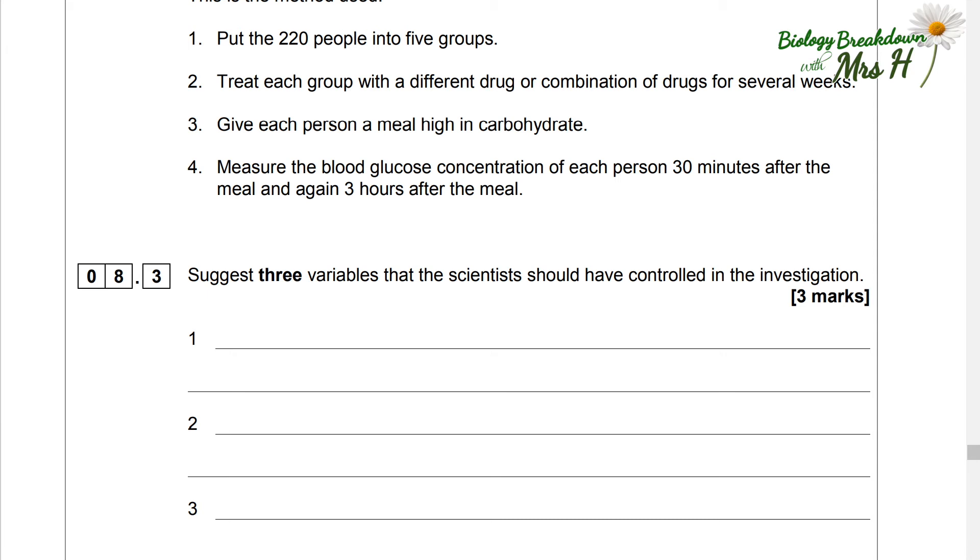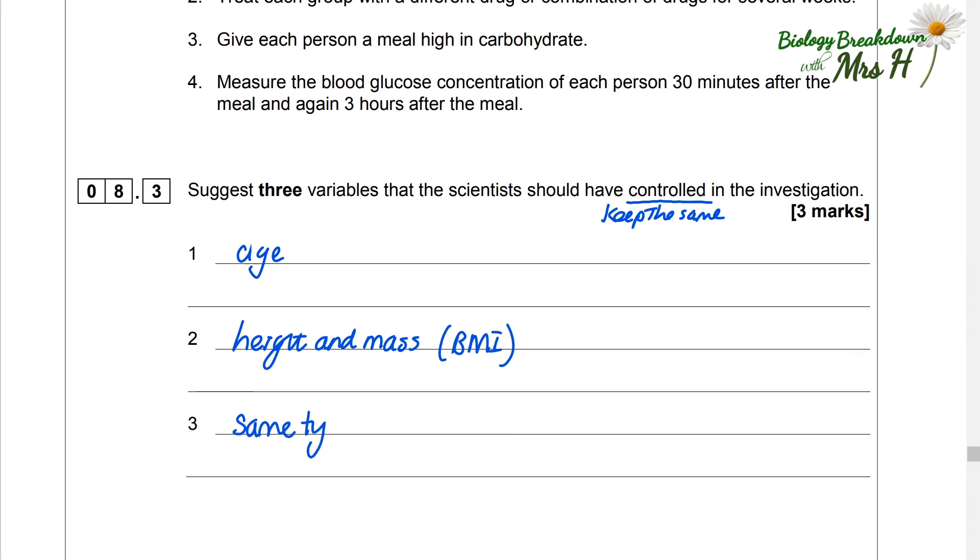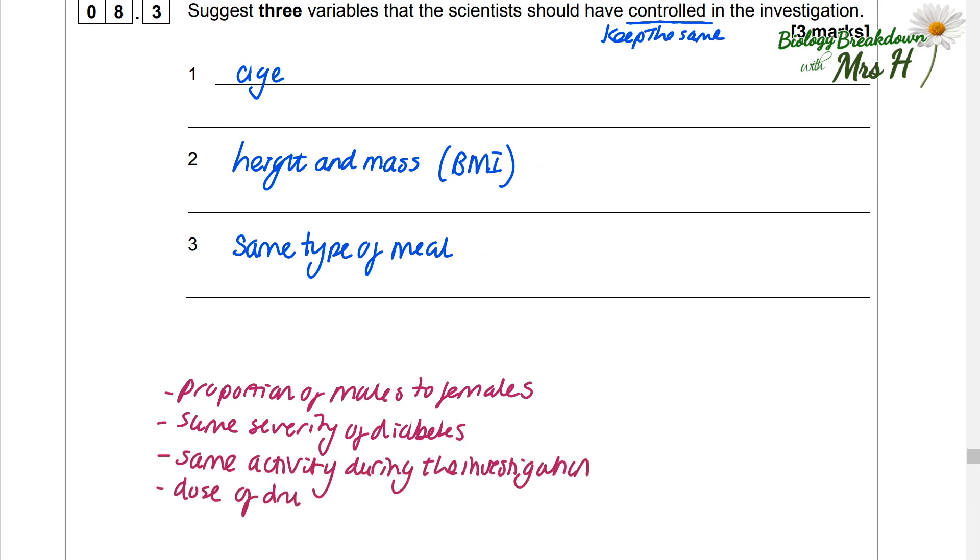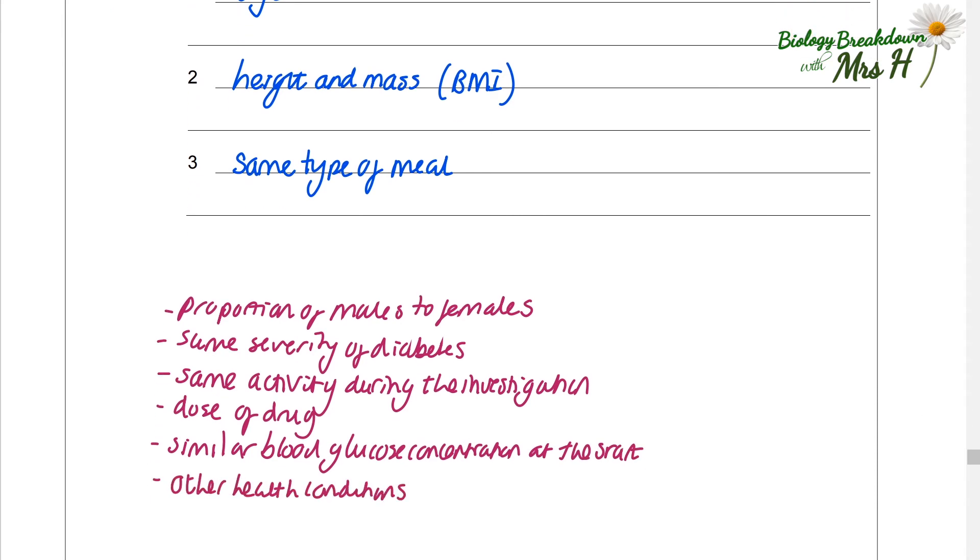Suggest three variables that the scientists should have controlled in the investigation. There are a lot. So we'll just choose three. We can choose people of the same age, the same height and mass, so the BMI, the same type of meal and then other things that you could have written were proportion of males to females, same severity of diabetes, same activity during the investigation, the dose of the drug, similar blood glucose concentration at the start and other health conditions or other drugs being taken need to be aware of and keep them the same in the groups.